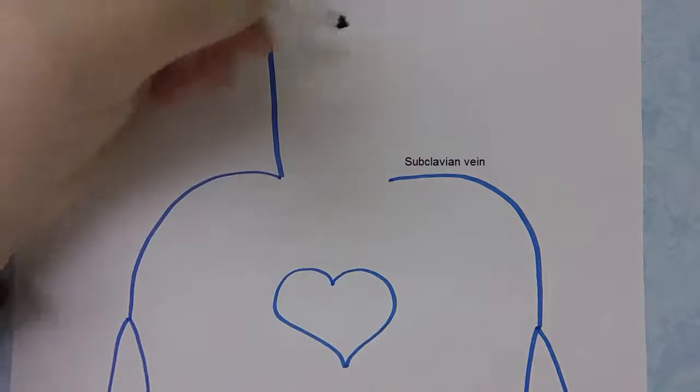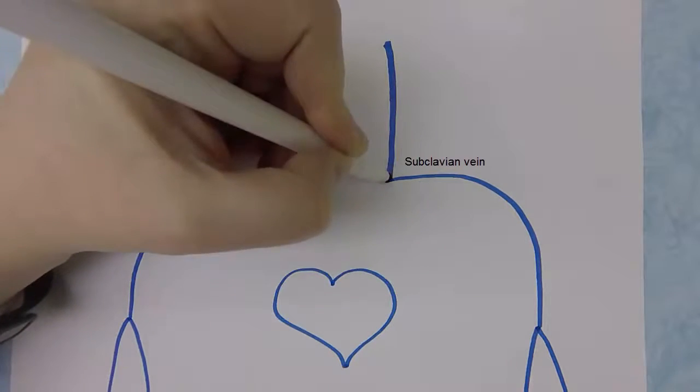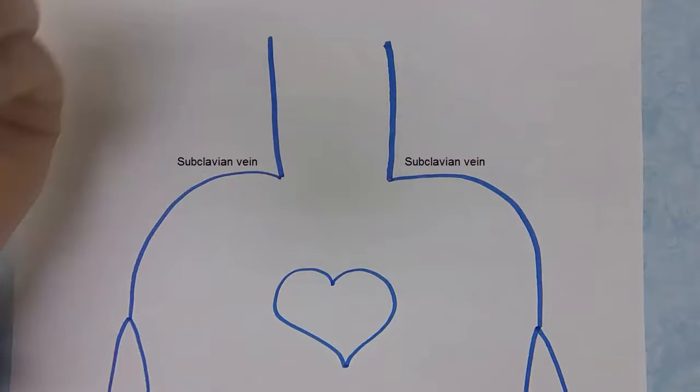Now each of the subclavian veins is going to be joined by the main vein draining the inside of the skull and this is the internal jugular vein.